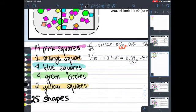Let's try it with the blue squares now. So I have 4 blue squares out of a total of 25 shapes in my sample. I can rewrite that as 4 divided by 25.